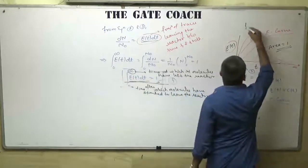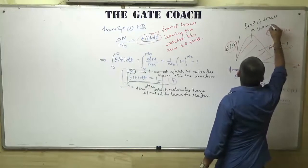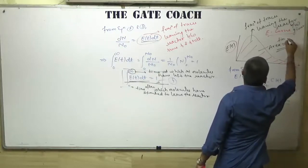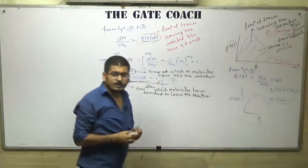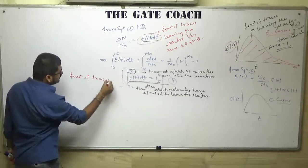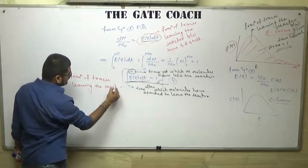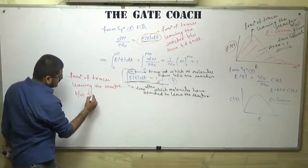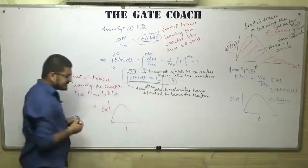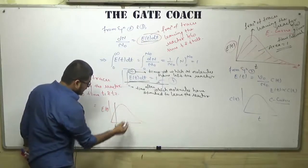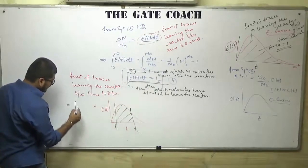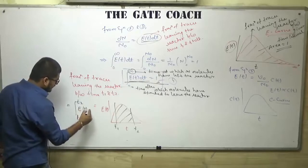The area of the E curve represents the fraction of tracer leaving the reactor in a given time interval. If someone asks you to calculate the fraction of tracer leaving the reactor between time t₁ and t₂, just calculate the area of the E curve between t₁ and t₂, which mathematically is the integral from t₁ to t₂ of E(t) dt.